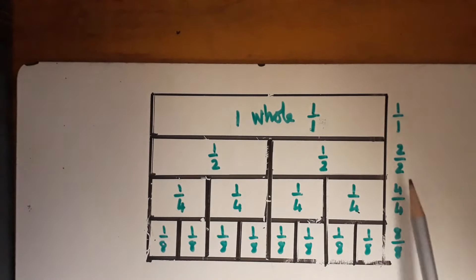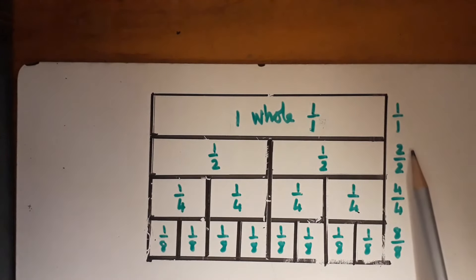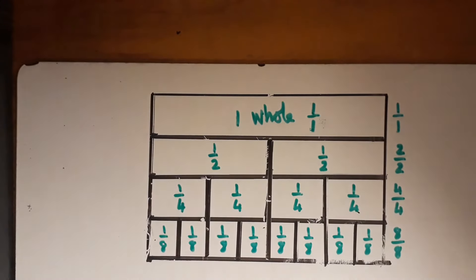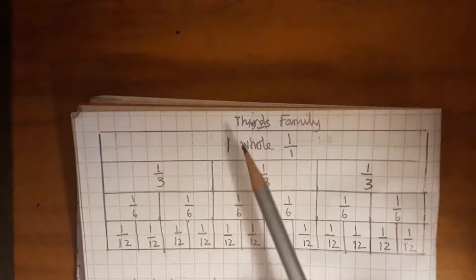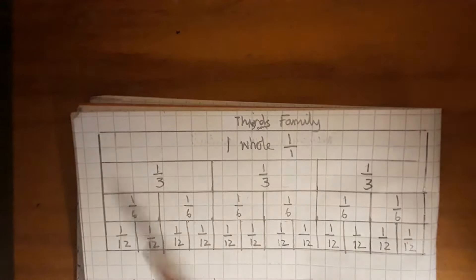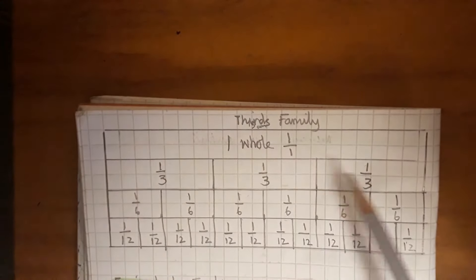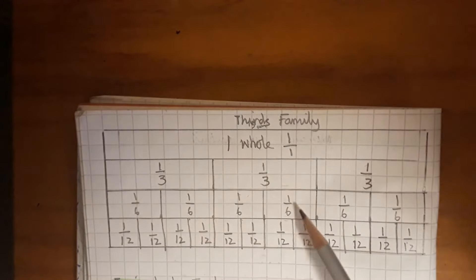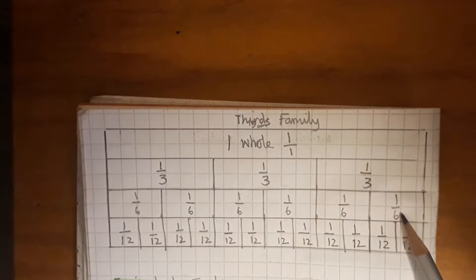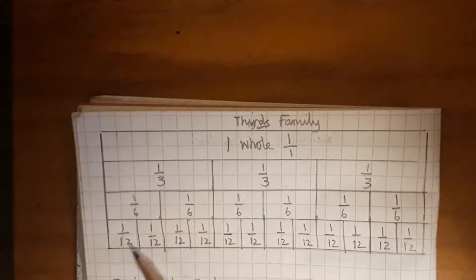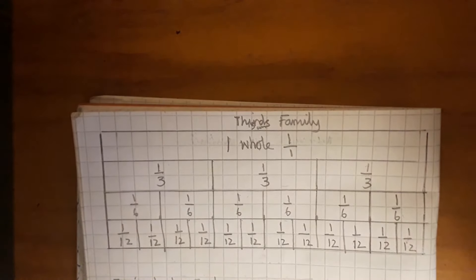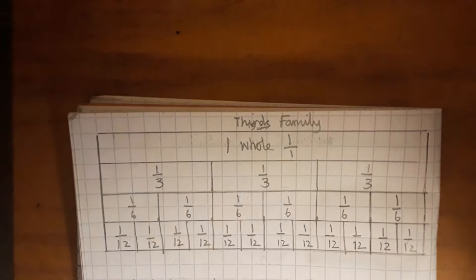To have a whole strip of the halves family, you need two halves, four quarters, or eight eighths to be the same as one whole. We end up with twelve equal parts in this strip, and that can help us with equivalent fractions.